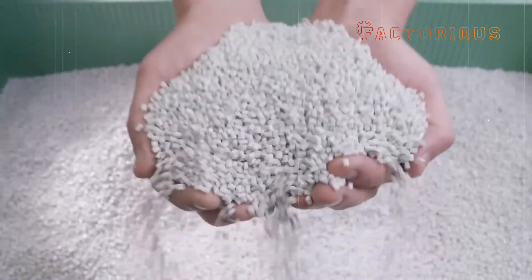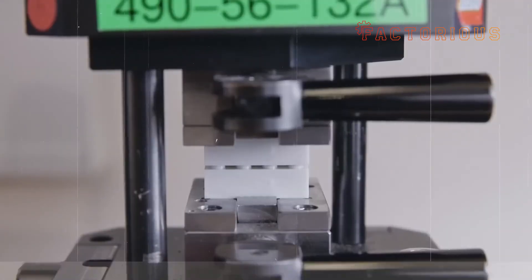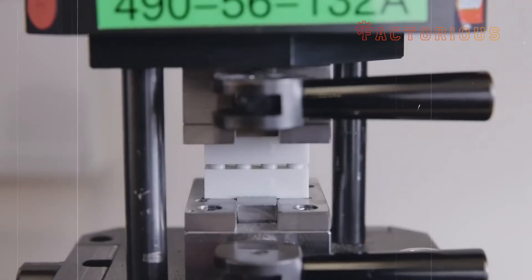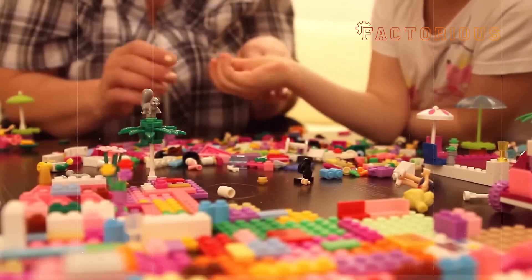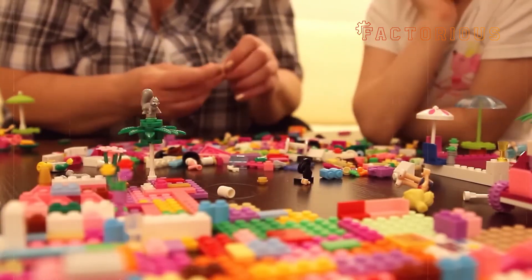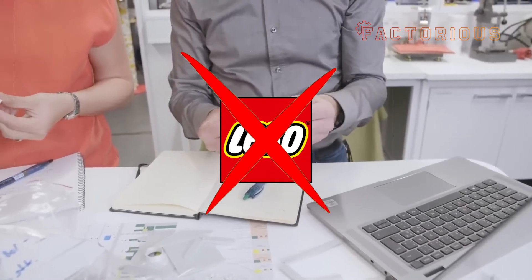Their biggest challenge? Finding an alternative material that's as perfect as ABS. See, Lego's whole universe relies on that flawless fit, that click, and any change to the material could ruin decades of compatibility. If a new eco-brick doesn't lock perfectly with old ones, it's no longer Lego.